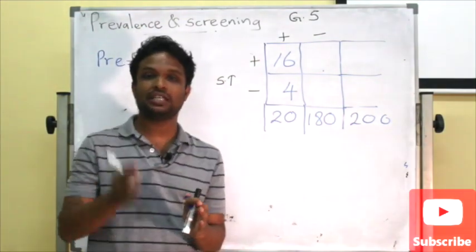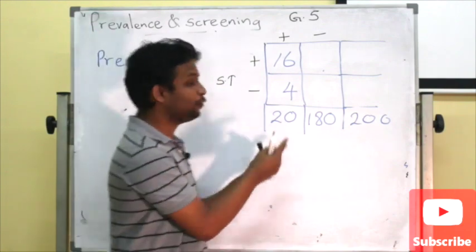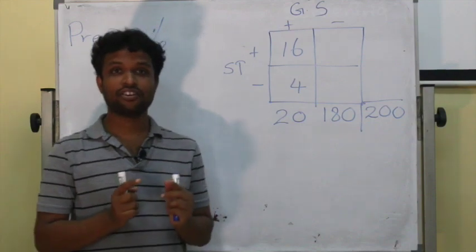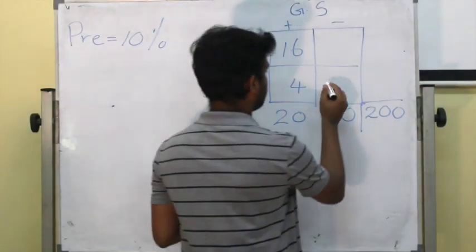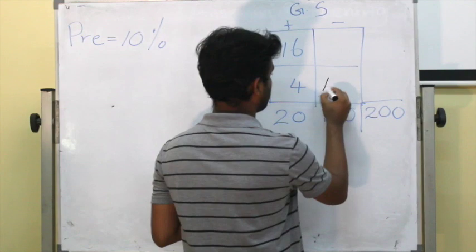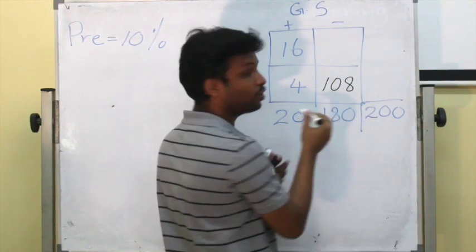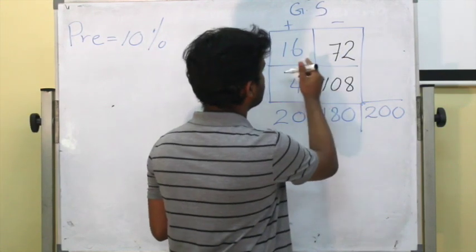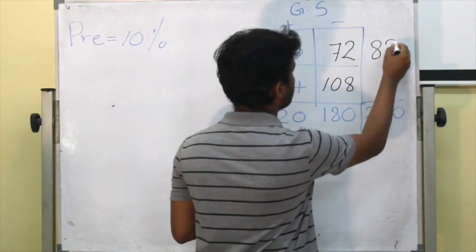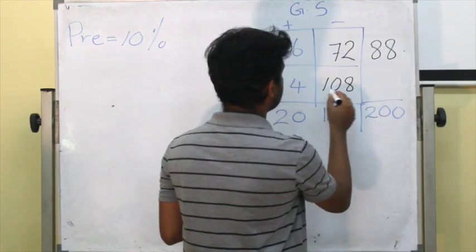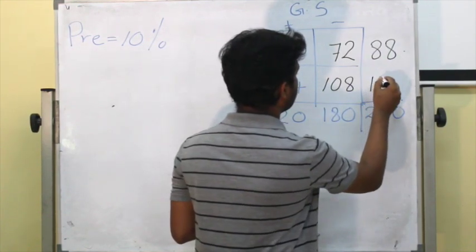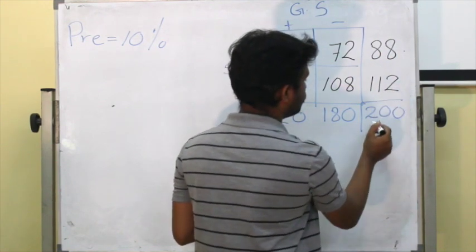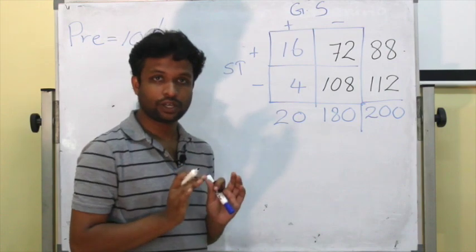The specificity was 60%. Calculating 60% out of 180 gives 108 true negatives, and because of that, 72 are false positives. So the total screen-positive column is 88, and total screen-negative column is 112. 88 plus 112 equals 200, so the two-by-two table checks out.